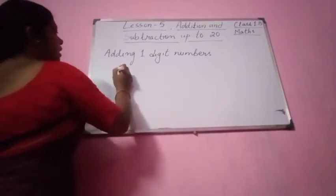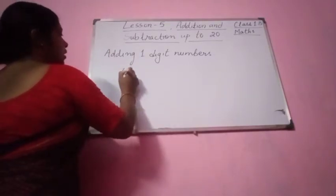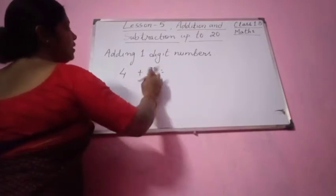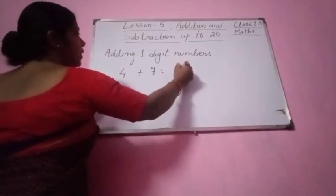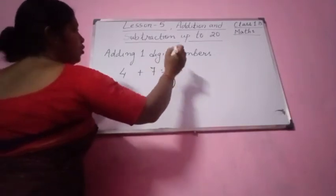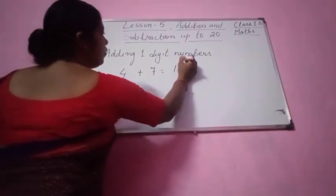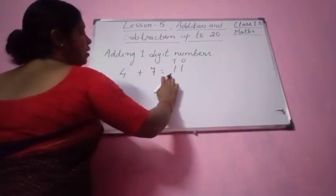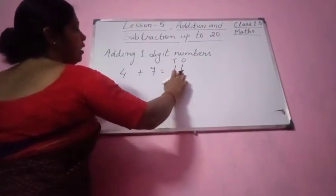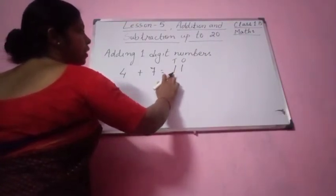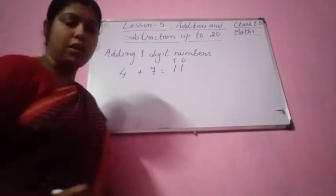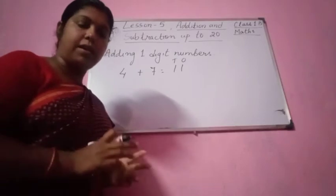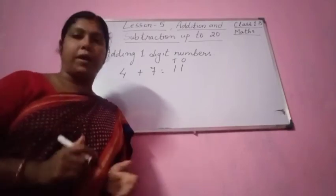You see this number? Any number we can take. You take 4 plus 7. So 4 plus 7 equal to how much? 4 plus 7 equal to 11. So you can write here 1s and you can write here 10s. You see: 10 plus 1 equal to 11. That means 1 ten and 1 one. In this way we can group it.